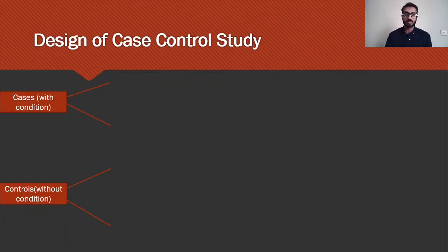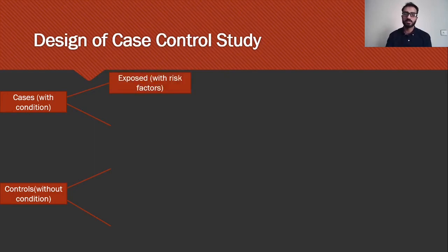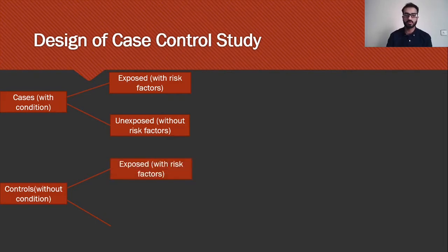The design of a case control study: a case control study begins with the cases — those who have the condition — and we compare them with the controls — those who don't have the condition. Based on a history questionnaire, we divide them into two further subgroups: how many cases were exposed to the risk factor and how many remained unexposed. Similarly, how many controls were exposed to the risk factor and did not develop the condition, and how many controls were not exposed and remained unexposed.